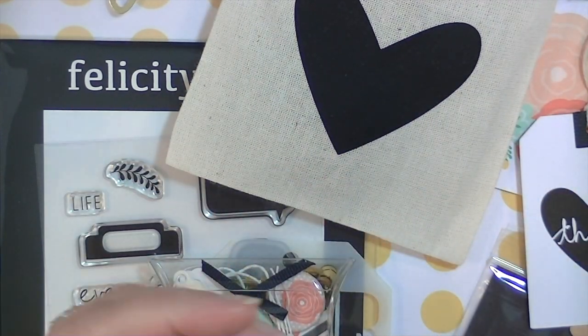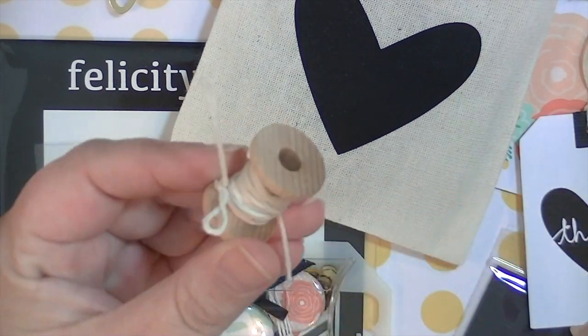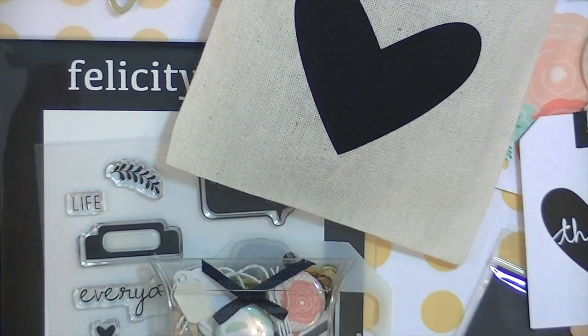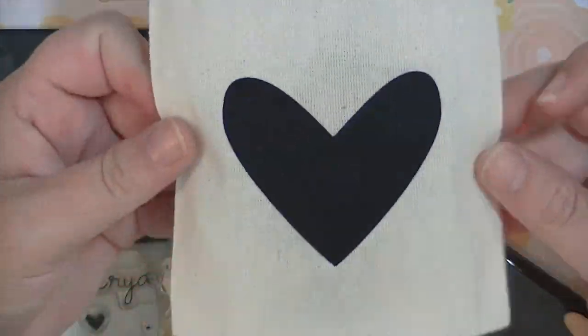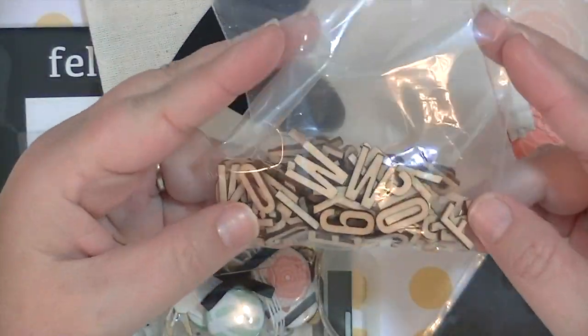So the first little item I'm showing you here is a bunch of natural twine on a little wooden spool, which is really cute, and you also get this little muslin bag with the black heart.